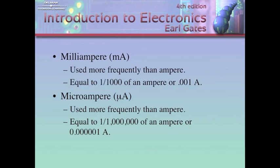This shows us some of the common terms and definitions that we'll use. This is milliampere. Milliampere, used more frequently than the ampere, is equal to one one thousandth of an ampere, or .001. Or, one times ten to the negative third. Microampere, used more frequently than the ampere in electronics, is equal to one millionth of an ampere, or .000001 amp. Or, in engineering notation, this would be one times ten to the negative sixth.